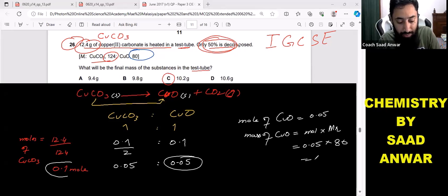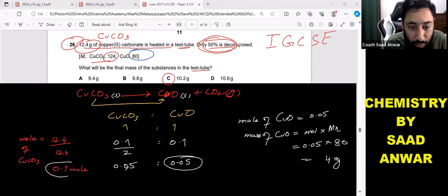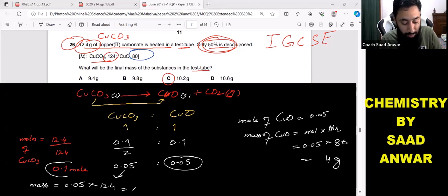But no option is 4 here because this is yet incomplete. I have 0.05 copper carbonate remaining. I need to convert this into mass as well. So 0.05, now the formula mass of copper carbonate is 124, so I multiply this with 124. So when I multiply 0.05 with 124, it will be 6.2 grams.